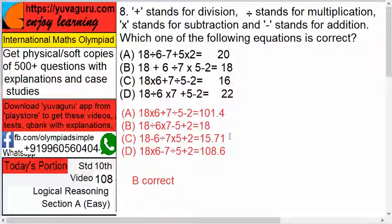What about B? If you solve this, you'll get 18, so B is correct. C and D, they are also not correct, so only B is the answer.